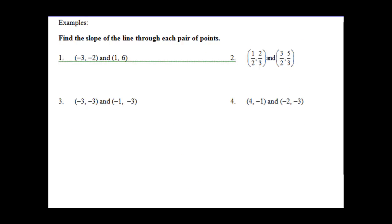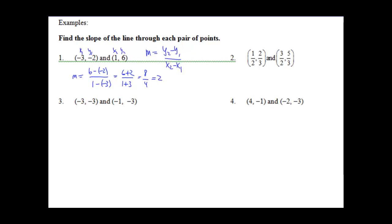Let's find the slope through each pair of points. Using y2 minus y1 over x2 minus x1, let's label x1, y1 as the first point and x2, y2 as the second. So we take 6 minus negative 2 over 1 minus negative 3. That gives us 6 plus 2 over 1 plus 3, which is 8 over 4, which equals 2. So m equals 2.